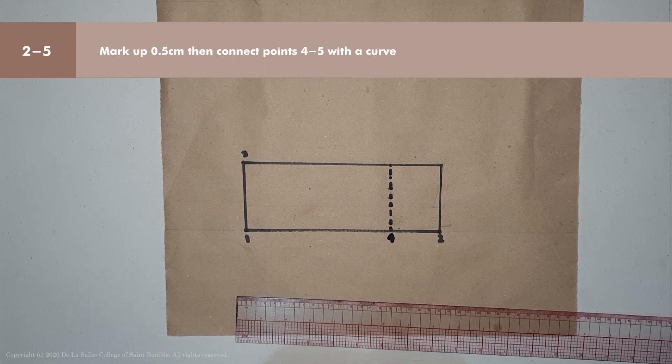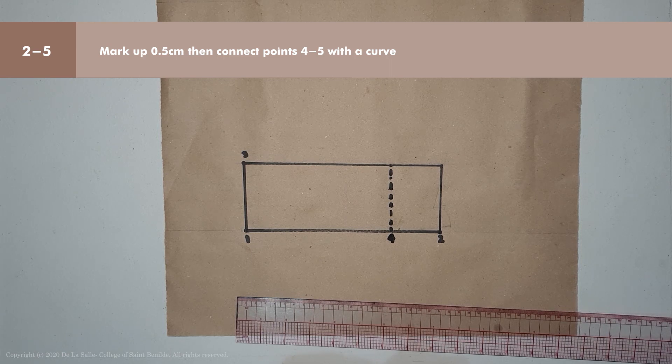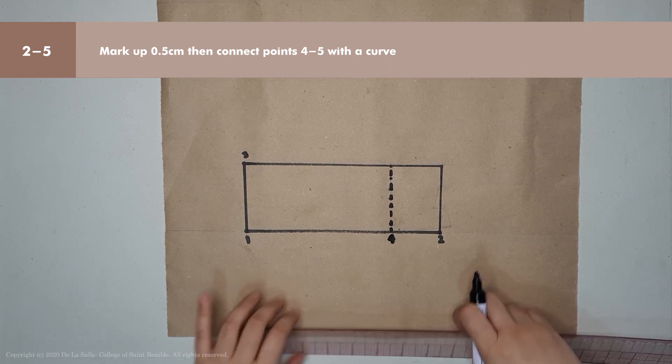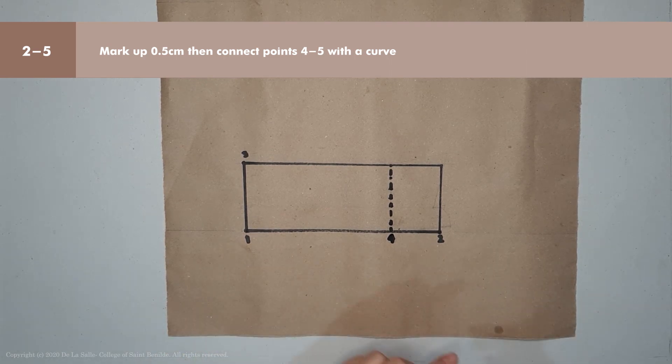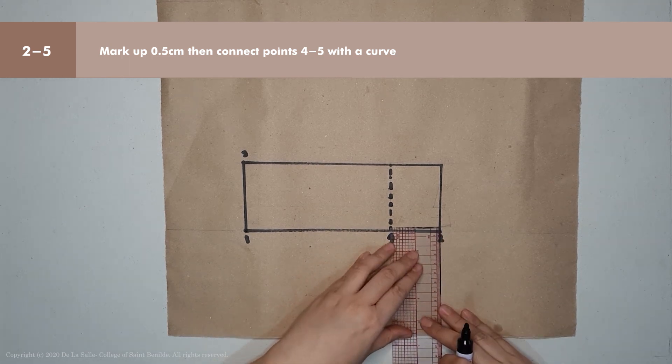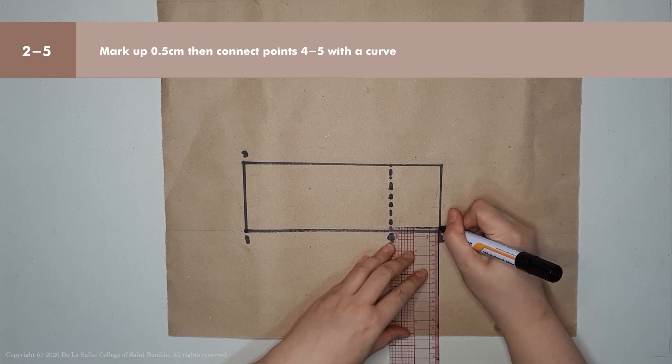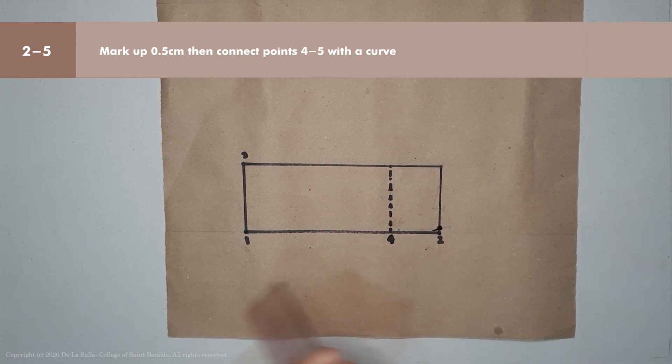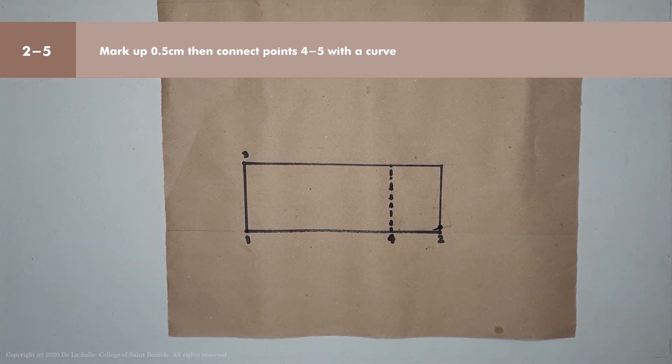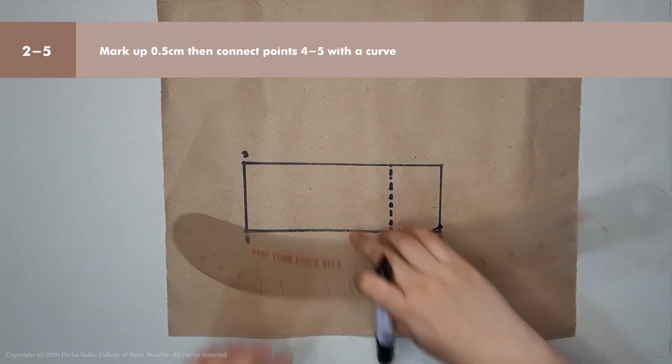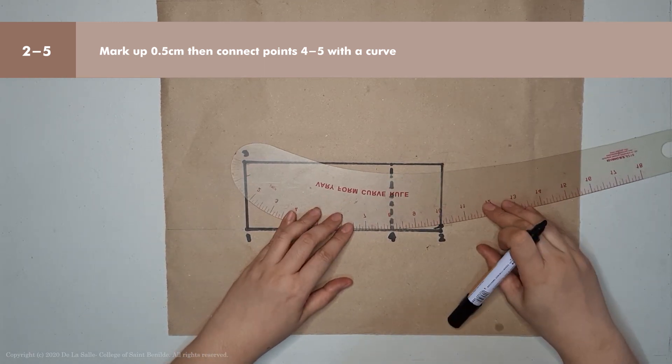Next is points 2 to 5. Points 2 to 5 is 0.5 cm going up. Then connect points 4 and 5 with a shallow curve.